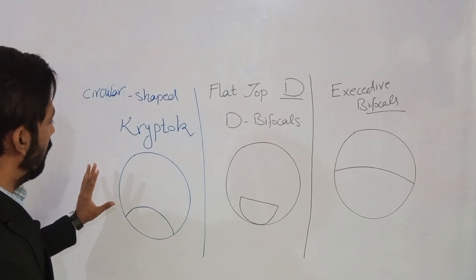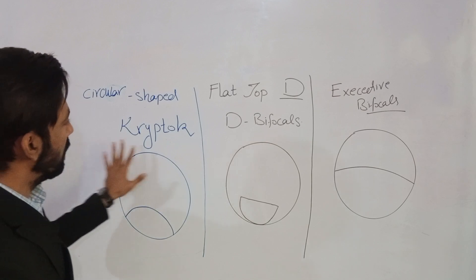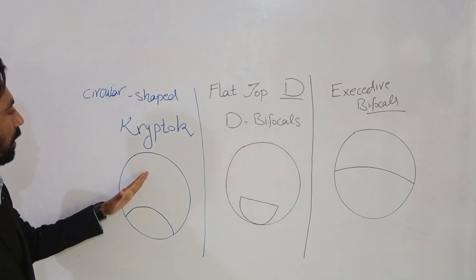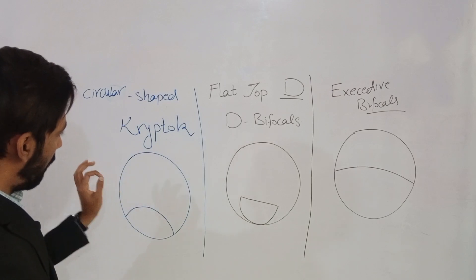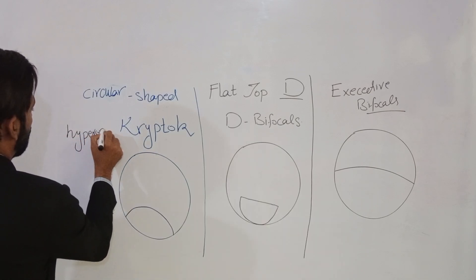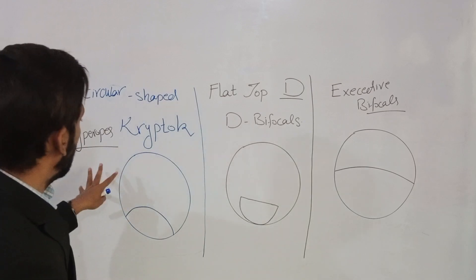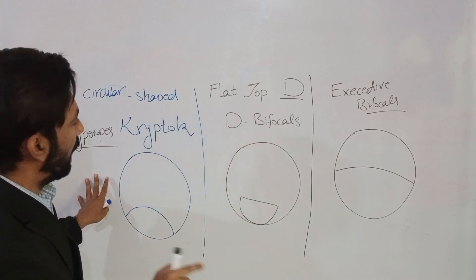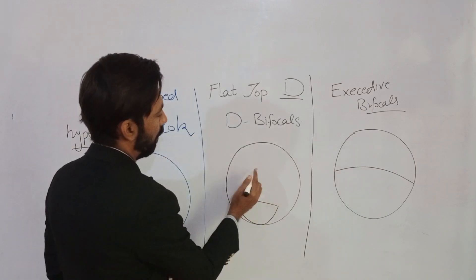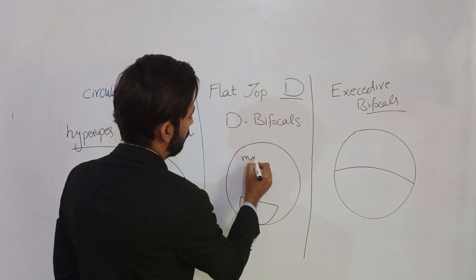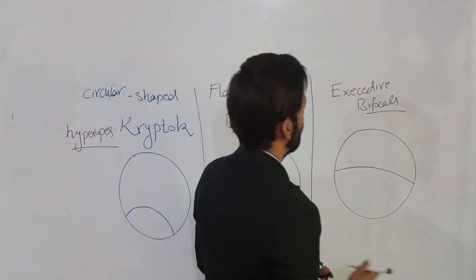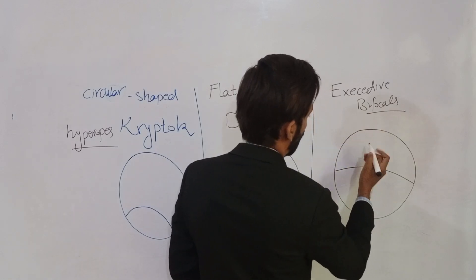Now we will learn about the indications for each type. Circular or Kryptok bifocals are preferably indicated for hyperopic patients. If you want to know the reason, the link is in the description. Flat-top D bifocals are most suitable for myopic patients. Executive bifocals are most suitable for children.